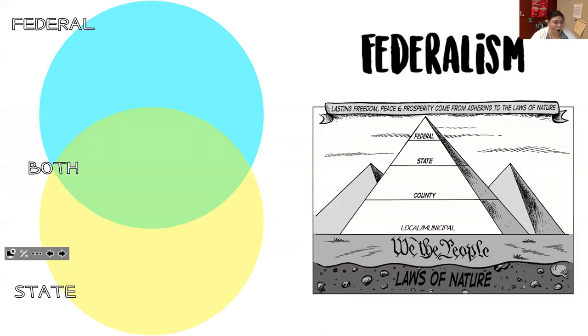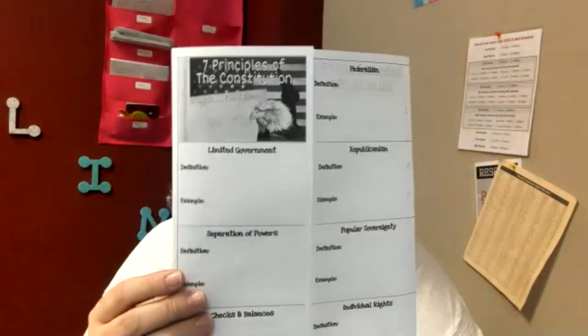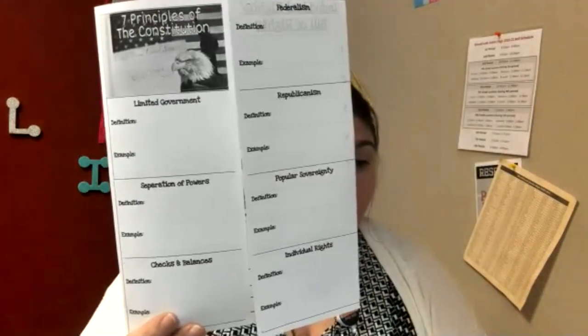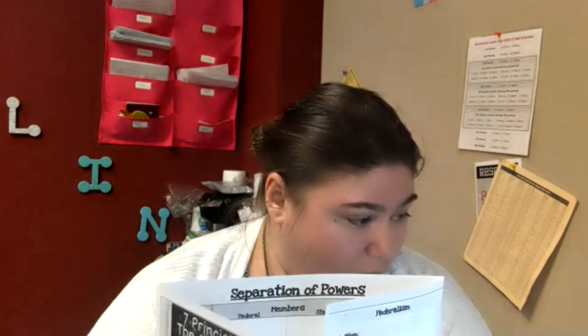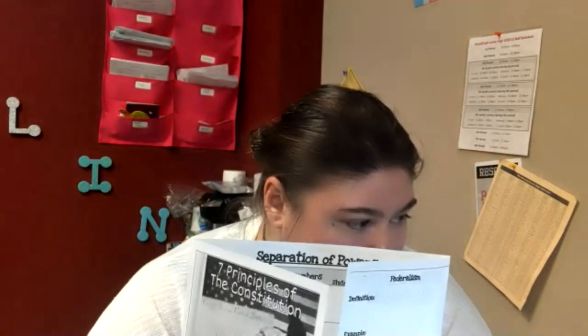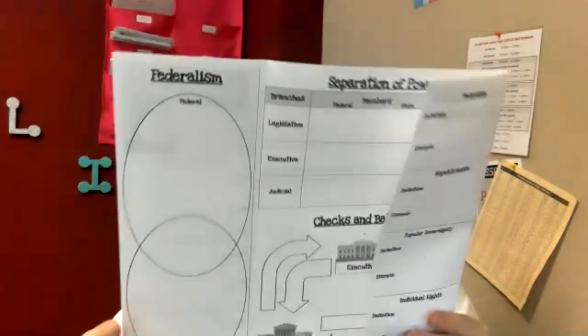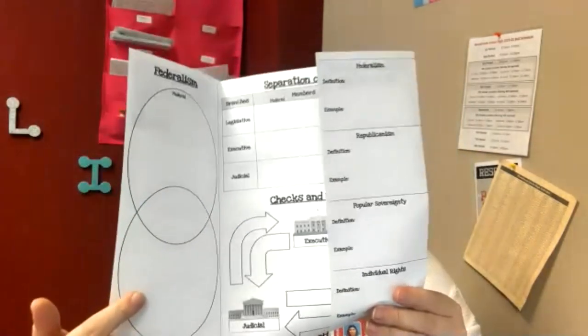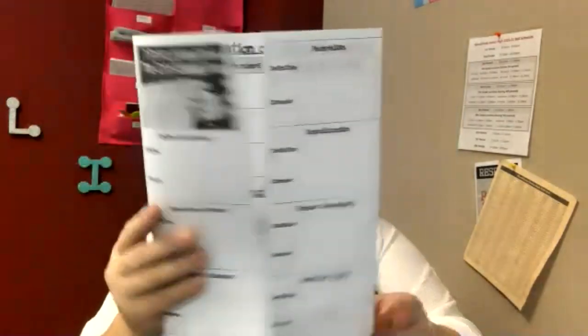Federalism is a partnership between the federal or national government and the state government. What I would like you to do is grab your foldable. For those of you who are KVA, please look at your virtual ISN and look at slide 10. You're going to complete slide 10 or slide 9 in your virtual ISN. We're going to look at the Venn diagram — that is what we're going to be filling out today.